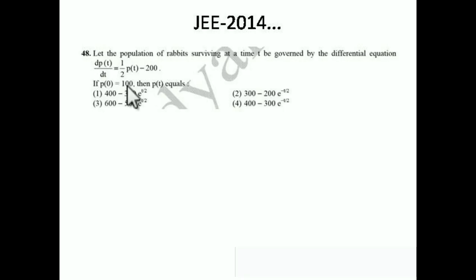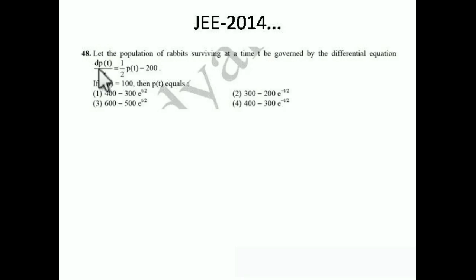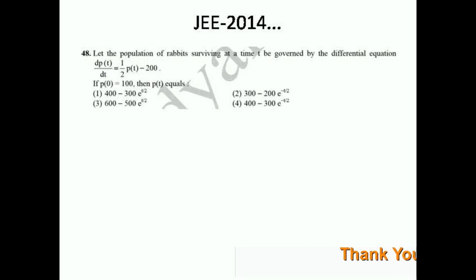Again, to find the constant c, they give us a condition: p(0) = 100. We have to find the expression for p(t). To find the constant, one condition is given, so we simply integrate. We need to separate the variables and integrate.